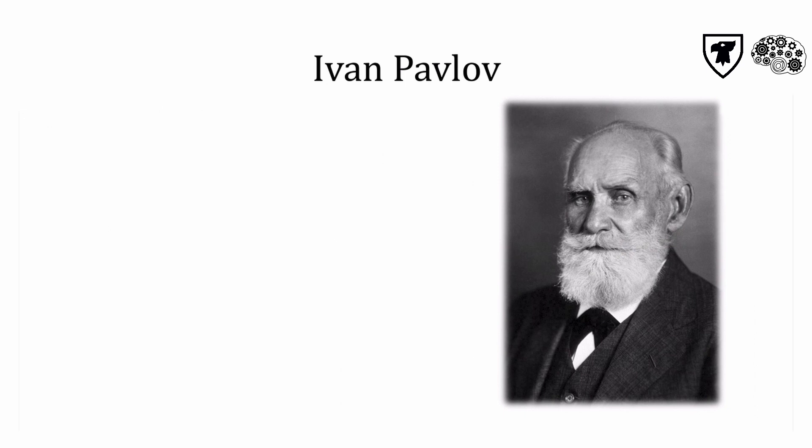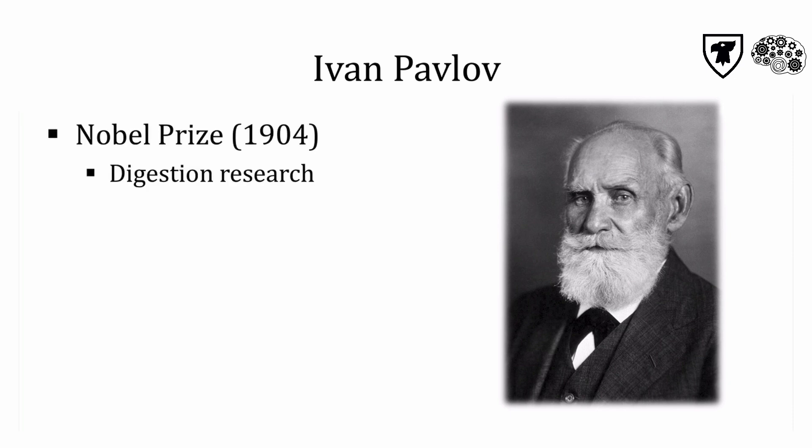You can't learn about classical conditioning without learning about Ivan Pavlov. He was a Russian physiologist who was awarded the Nobel Prize in Physiology or Medicine in 1904 — not for his work on associative learning, but for his research on saliva and digestion. He measured salivation in dogs when they were given different types of food, like meat powder.